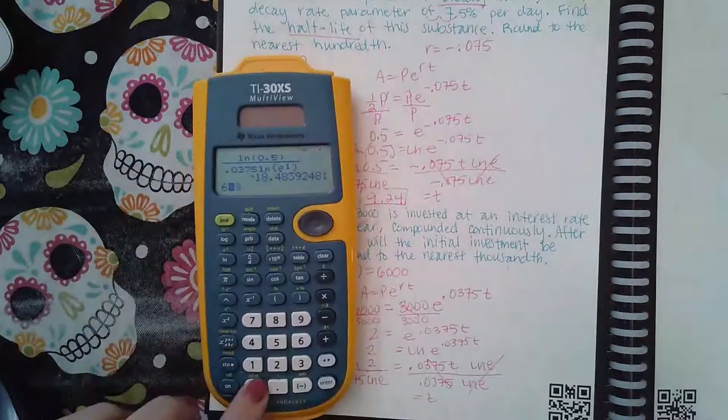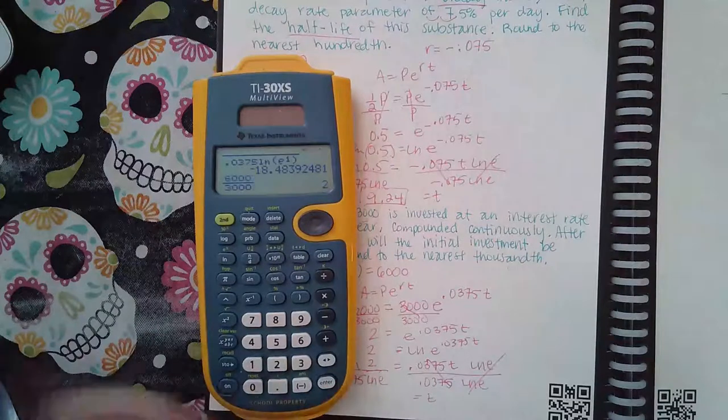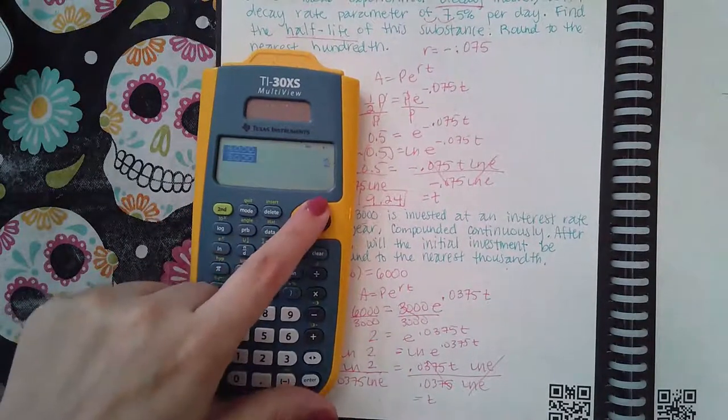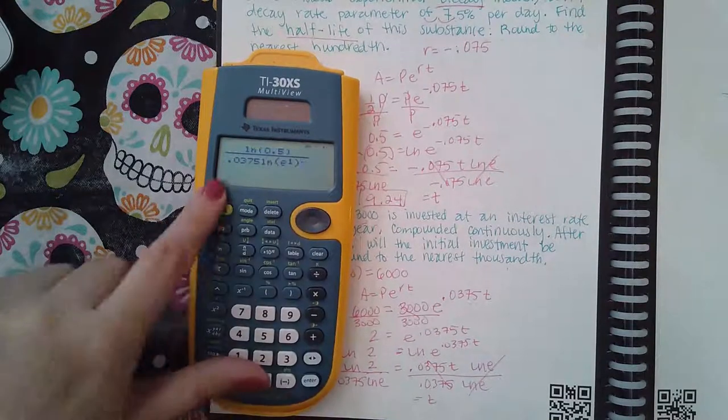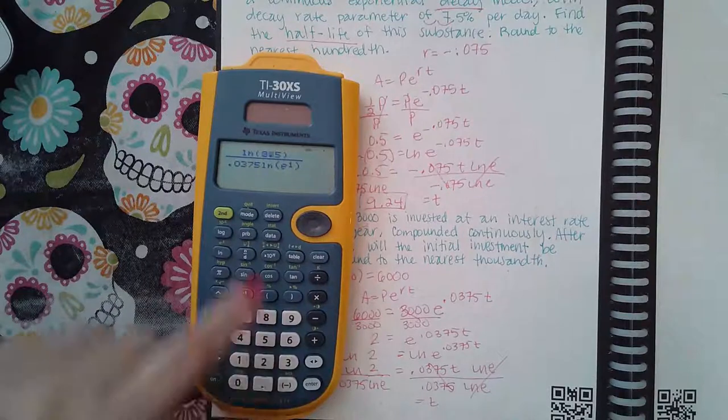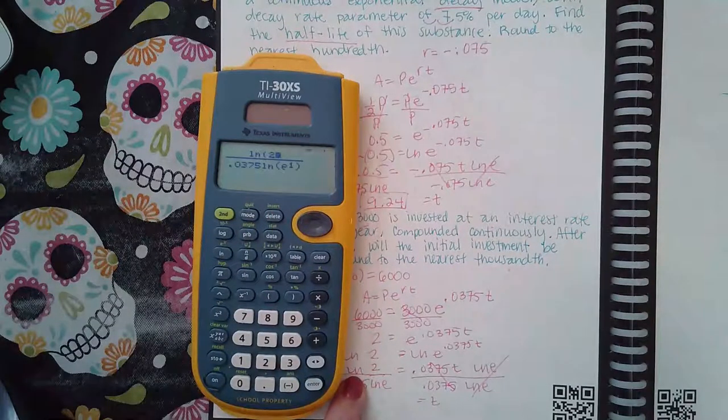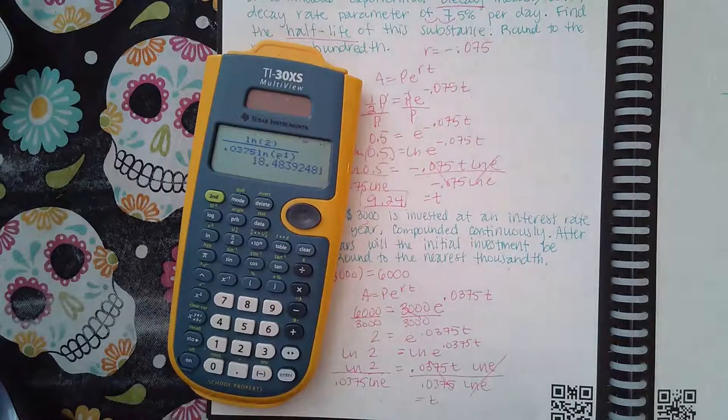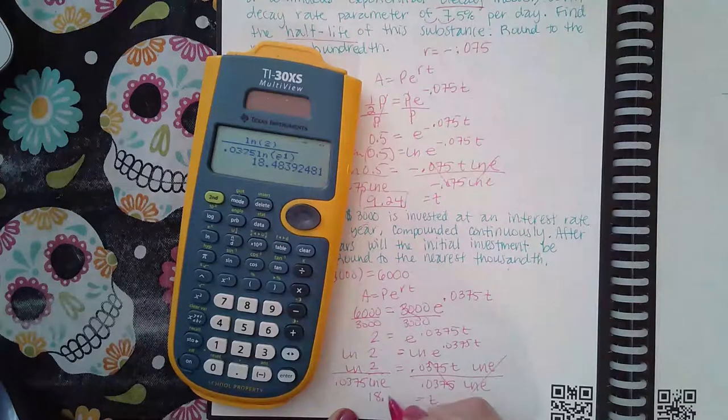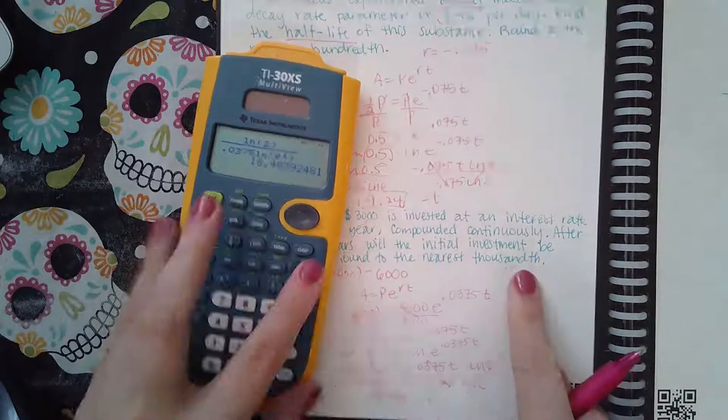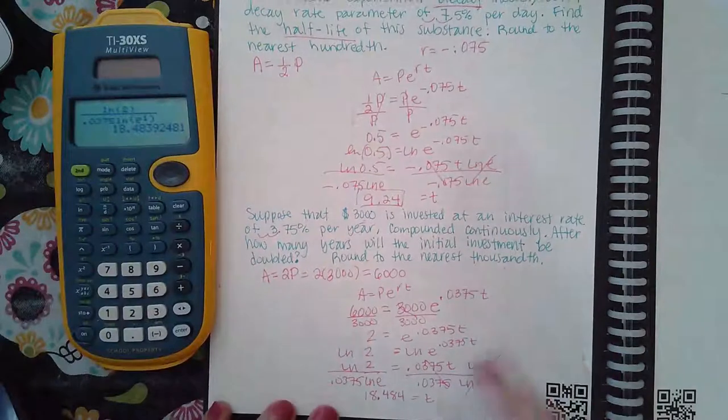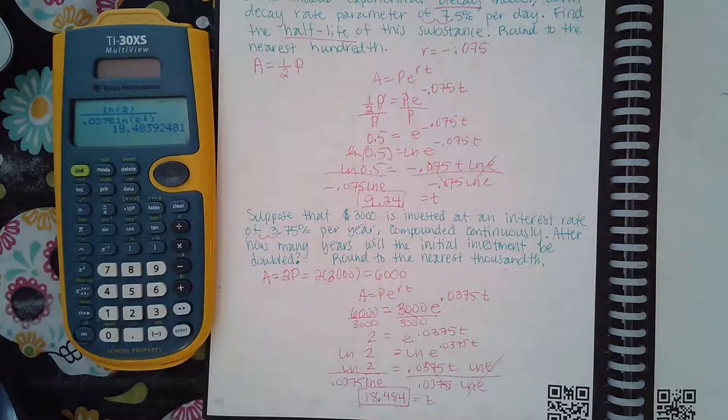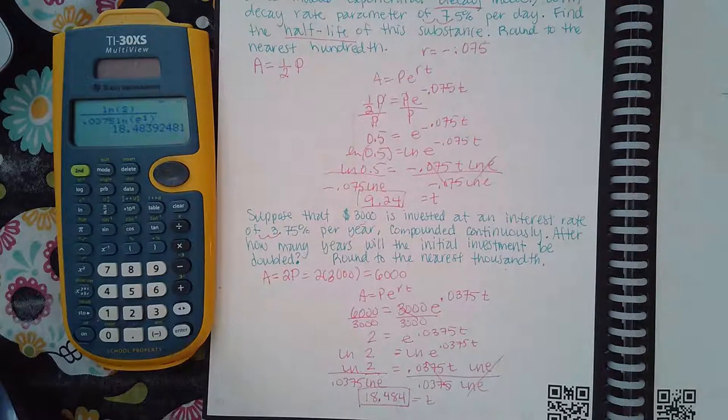So I'll just verify: 6000 divided by 3000 is 2, right? It should be, okay. So then now we're going to do, let me go back up to that fraction I typed in there and let me just change this to a 2. So ln of 2 over 0.0375 ln of e. And now I get 18.484 because I wanted me to round to the nearest thousandth, and so this is the answer for the amount of time. Time is in years, so it'll be that many years in order for this investment to double.